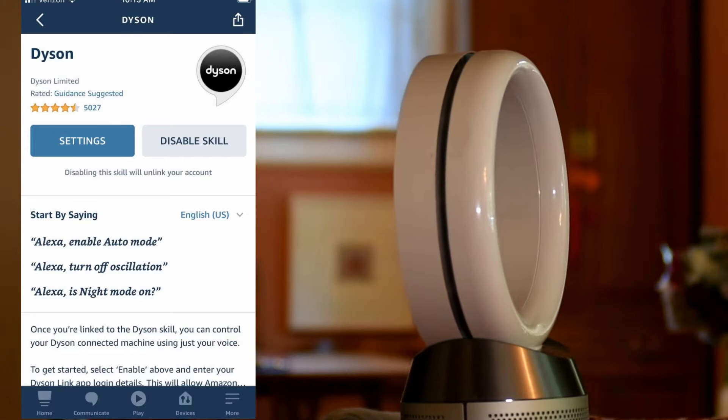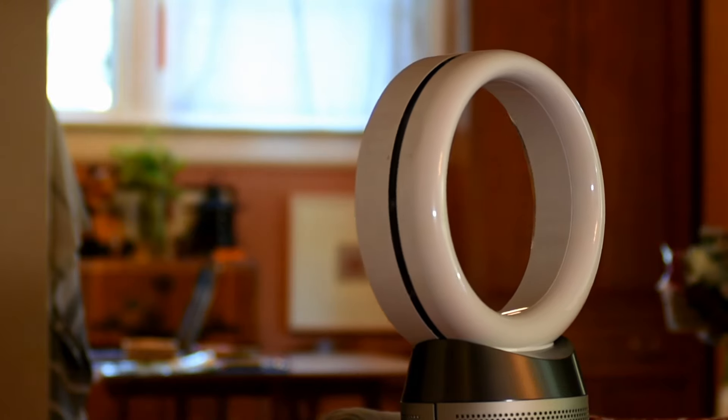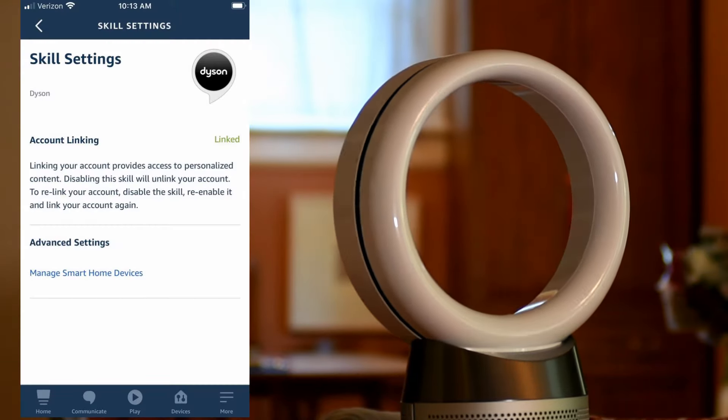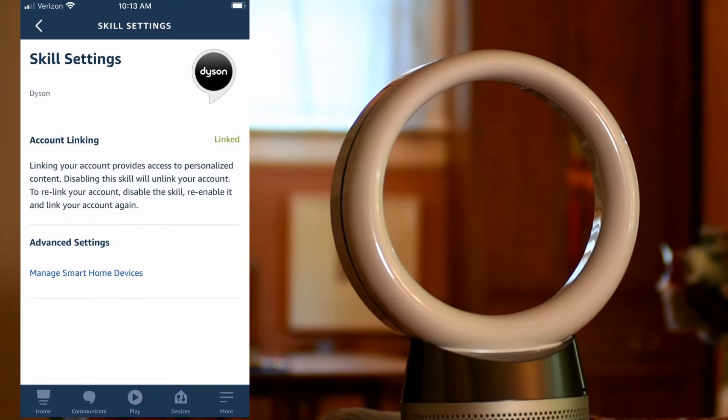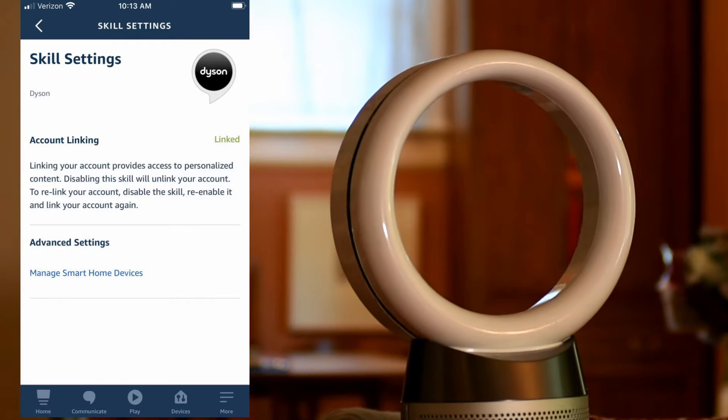Once you get the skill, go to settings. It will ask for your password for Dyson in your Dyson app, and those two things will be able to talk to each other.